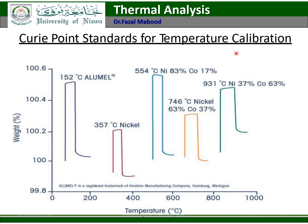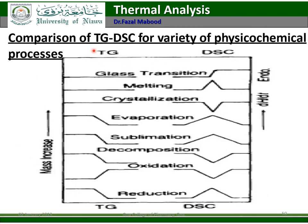Curie point standards are used for temperature calibration using aluminum, nickel, and other substances. Comparison of TG-DSC for a variety of physicochemical processes: for glass, the TG curve is flat while the DSC curve shows a step change; for melting, the TG curve is flat but the DSC shows a melting peak; for crystallization, the DSC curve shows a crystallization peak; for decomposition, both TG and DSC curves show corresponding features.